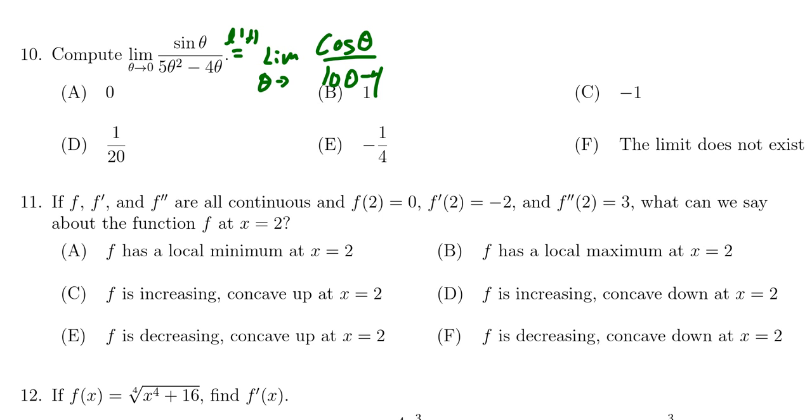Still take the limit as theta approaches 0, which now if we plug in theta equals 0, we're going to get cosine of 0, which is 1. And then in the denominator, we're going to get 10 times 0 minus 4, so the denominator becomes negative 4. And so we see the correct answer would be choice E.